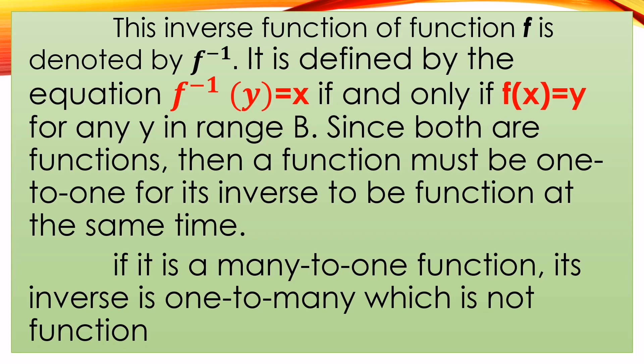Since both are functions, the function must be one-to-one for its inverse to also be a function. At the same time, if it is a many-to-one function, its inverse is one-to-many, which is not a function. So this means we can find the inverse function only when it is one-to-one. If it is many-to-one, the inverse is one-to-many, which is not an inverse function.